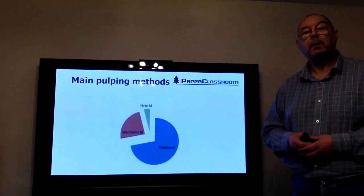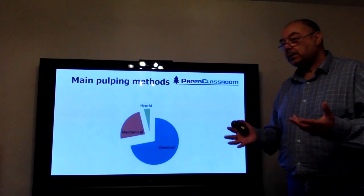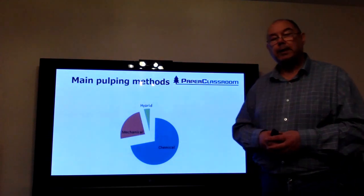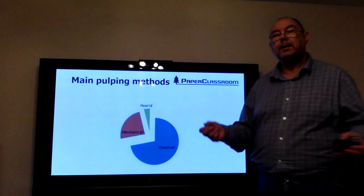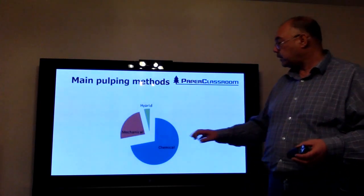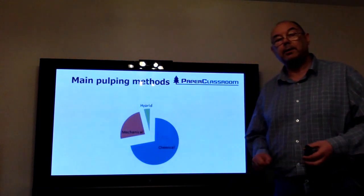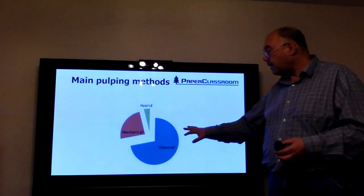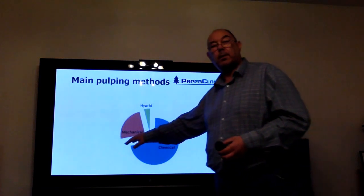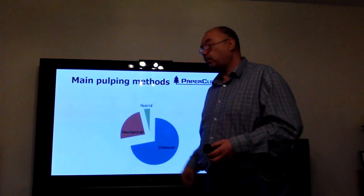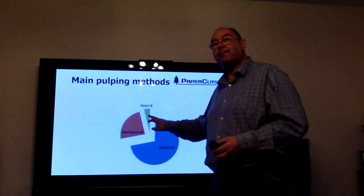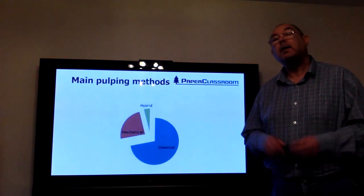We need an appreciation really of how much of the pulping in the world is in what type of pulping. As you can see here, almost three quarters of all the pulping in the world is chemical pulping, approximately a quarter is mechanical pulping, and a little bit, maybe five percent, is hybrid pulping. What we mean by hybrid pulping is a little bit of each—so a little bit of chemical pulping usually followed by a little bit of mechanical pulping.